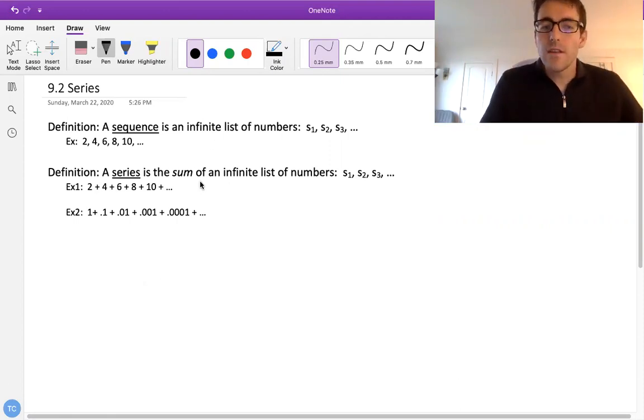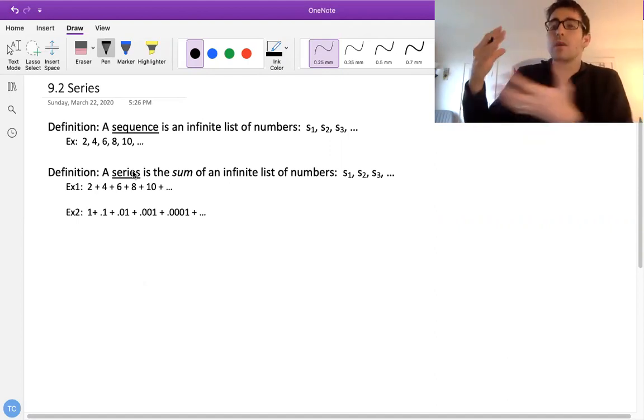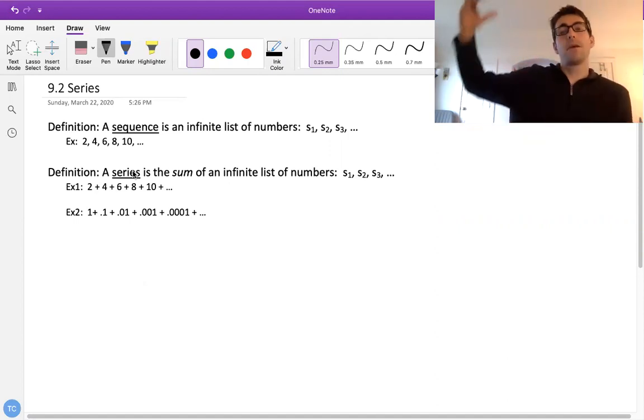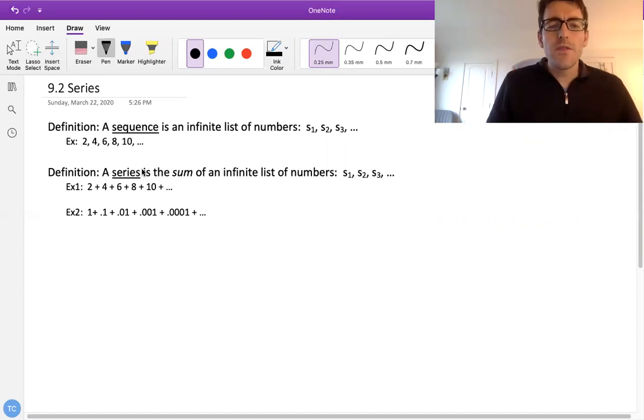I want to point out that this first example, since we're adding all these things together, and since these numbers keep getting bigger and bigger, this first number is going to actually be infinite. So we say that this diverges.